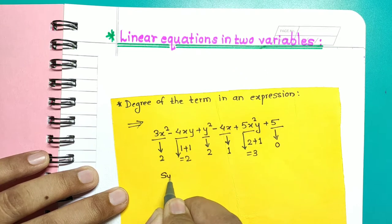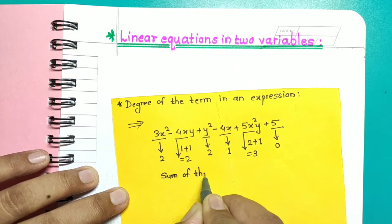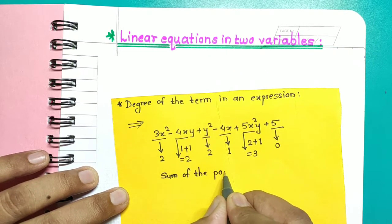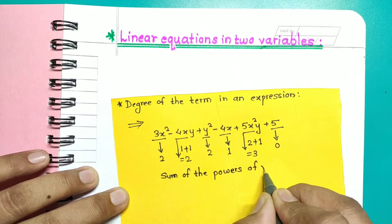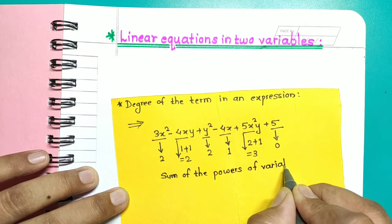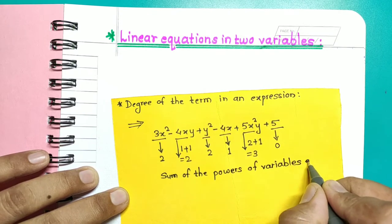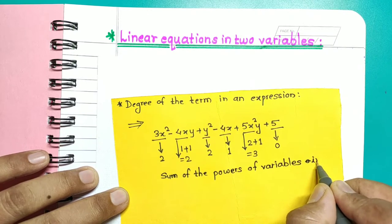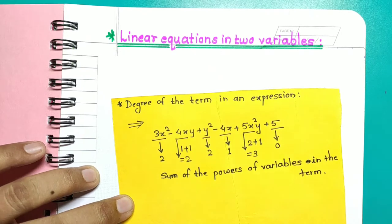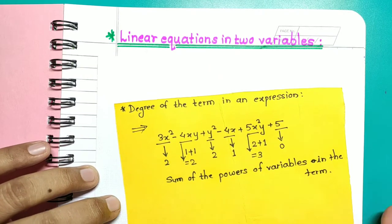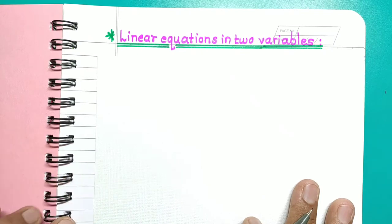So what is the degree of a term in an expression? It is the sum of the powers of variables in the term. Now let's go to the definition of linear equations in two variables.